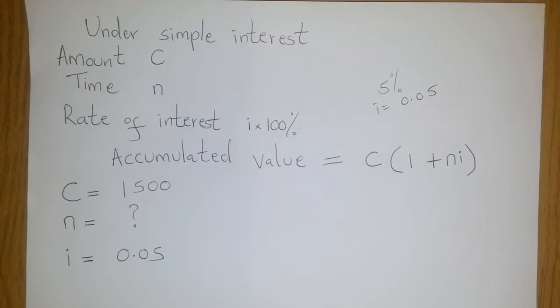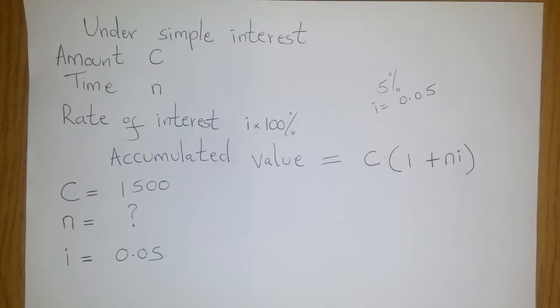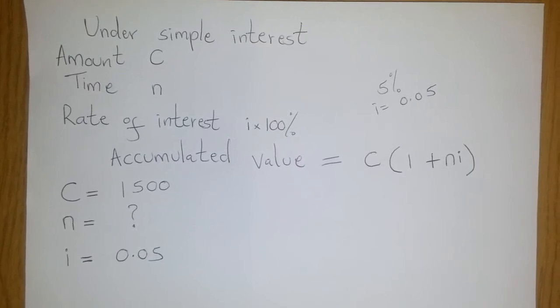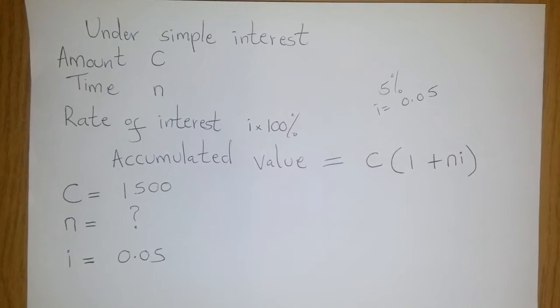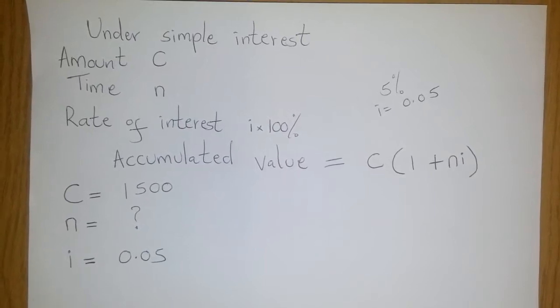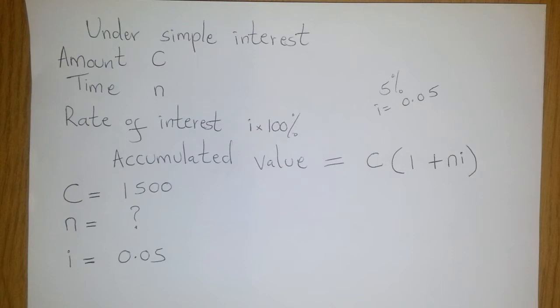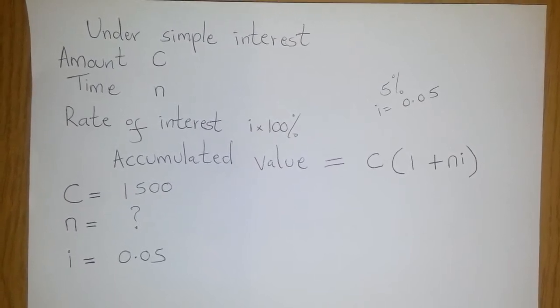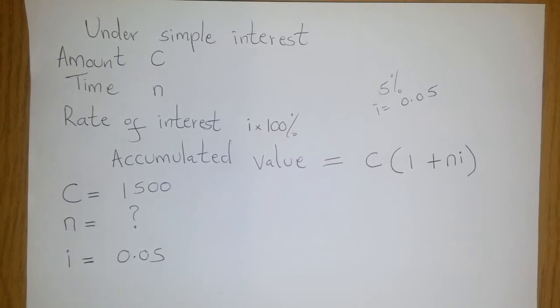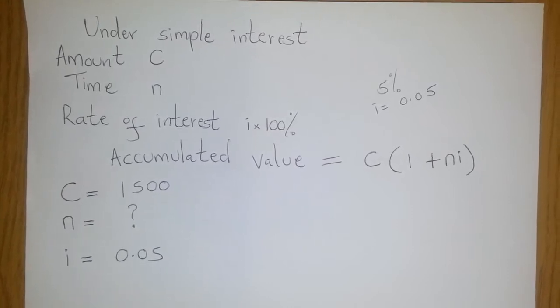Please note that the rate of interest is given as i times 100% simply to mean that when you're told that the rate of interest is 5%, your i is equal to 0.05 such that if you multiply it by 100%, you end up with a rate of interest of 5%.